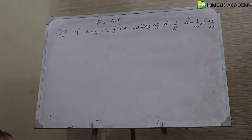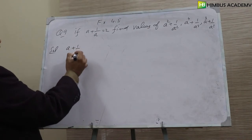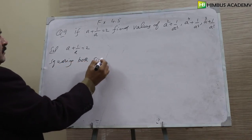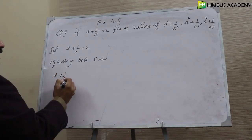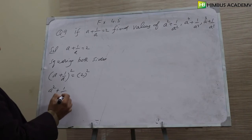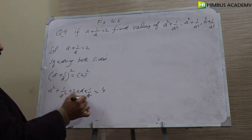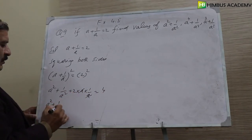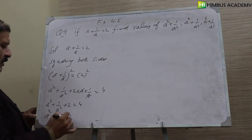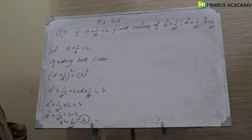First, we need to square both sides. Taking a plus 1 over a, whole squared, equal to 2 squared. Applying the formula (a+b)² = a² + b² + 2ab, we get a squared plus 1 over a squared plus 2 equals 4. Therefore a squared plus 1 over a squared equals 4 minus 2, which equals 2. Our first answer is 2.